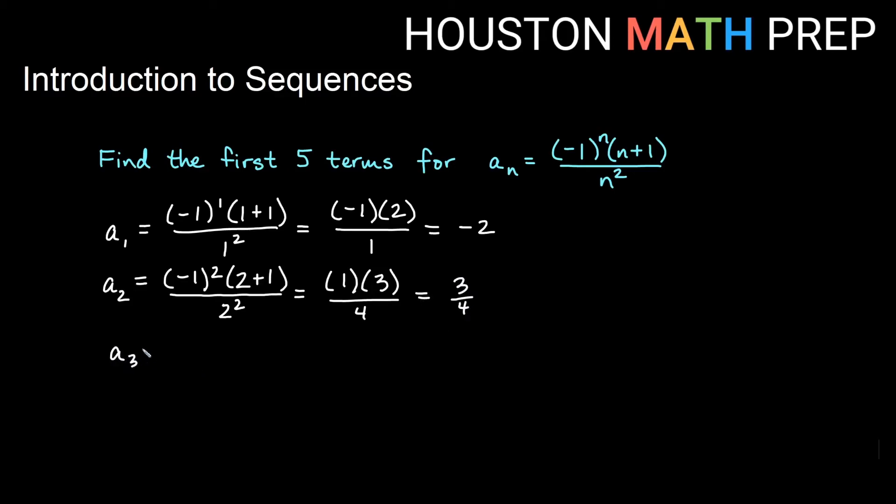For the third term, a3, we would have then negative 1 cubed. n plus 1 would be 3 plus 1, and on the bottom n squared becomes 3 squared. An odd power of negative 1 is going to be negative 1. 3 plus 1 will give us 4, and then on the bottom we will have 3 squared, which is 9. And that will give us negative 4 over 9 for our third term.